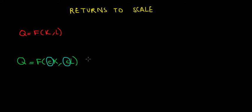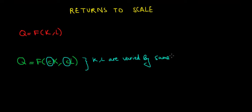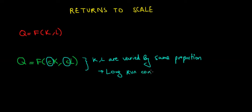Because we're changing capital and labor by the same proportion, we are varying both inputs. When both inputs are variable, we're speaking about a long-run concept. Let's write that down — because capital and labor are varied by the same proportion, we're speaking about a long-run concept.